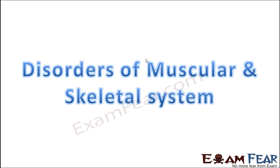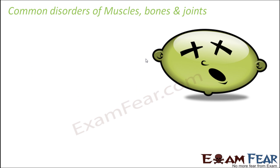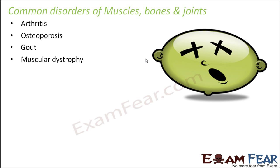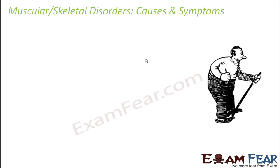What can happen if something goes wrong with the muscular system or the skeletal system? Some of the common disorders of muscles, bones or joints are arthritis, osteoporosis, gout and muscular dystrophy. These are some very common disorders that happen with people when they age. Let us see the common causes and symptoms of each of these.